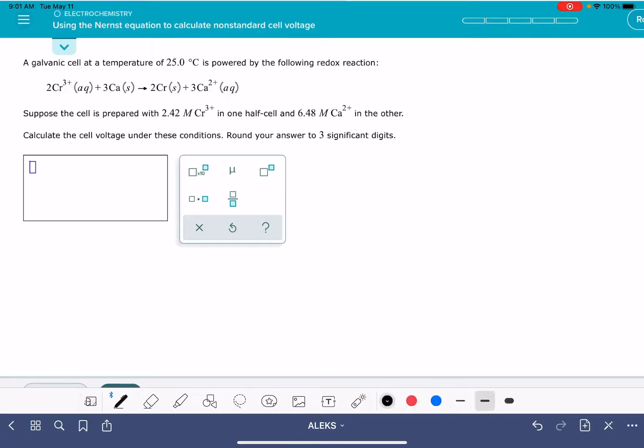The Nernst equation is E equals E standard minus 0.0257 over N times the natural log of Q. There's actually a second version of the Nernst equation that uses the LOG log, and in that equation this number is a little bit different. Either one of these equations is going to give you the same result.